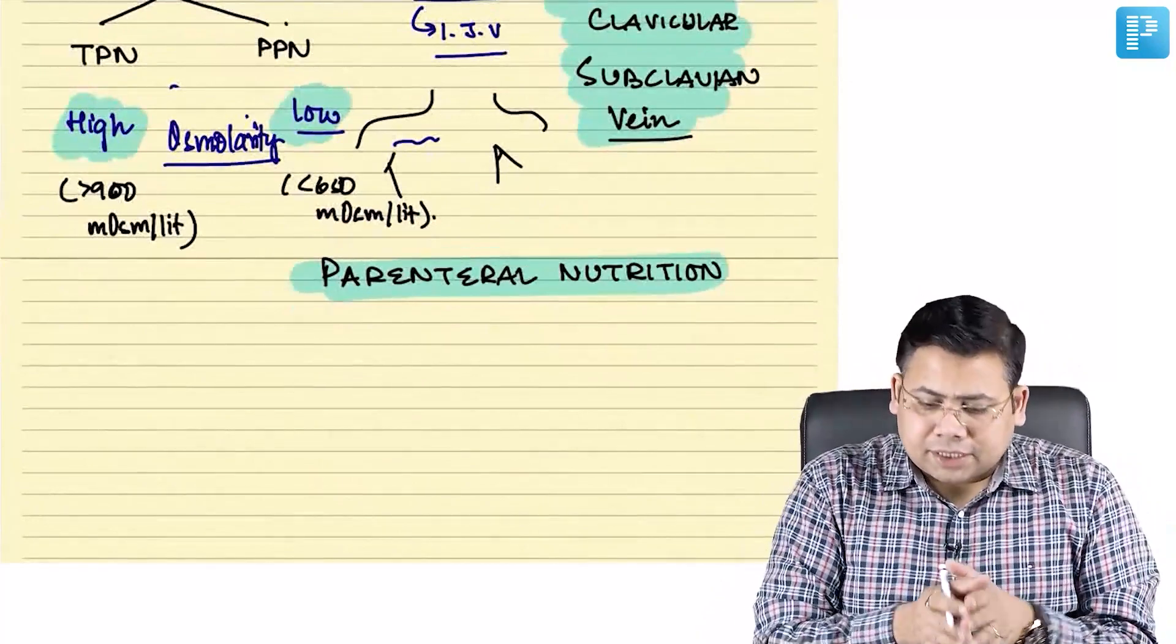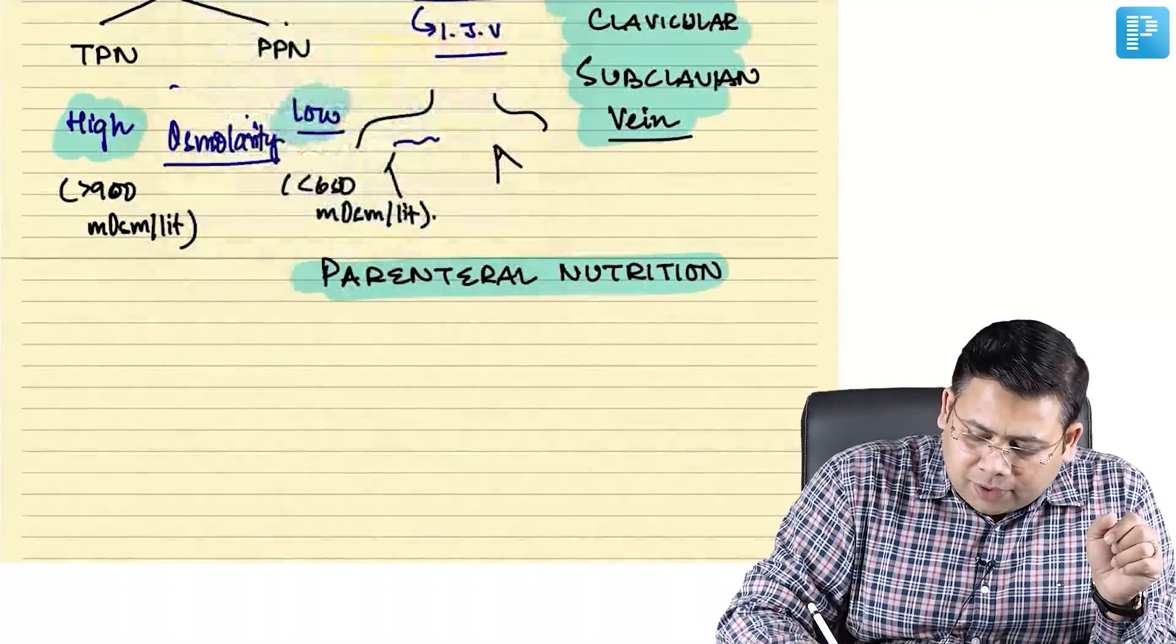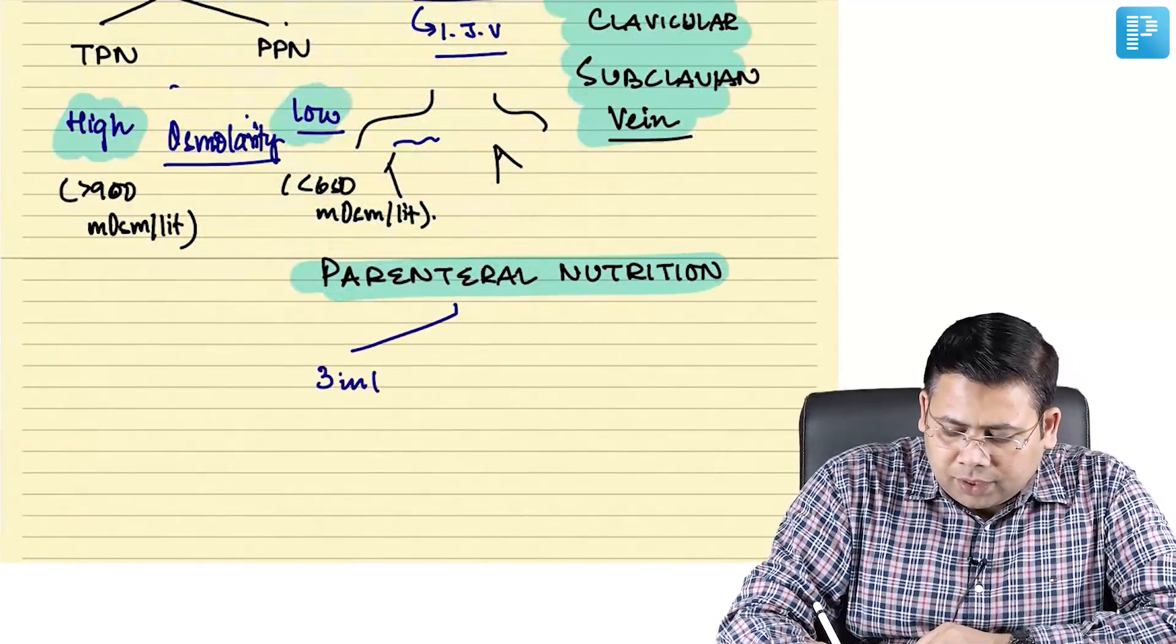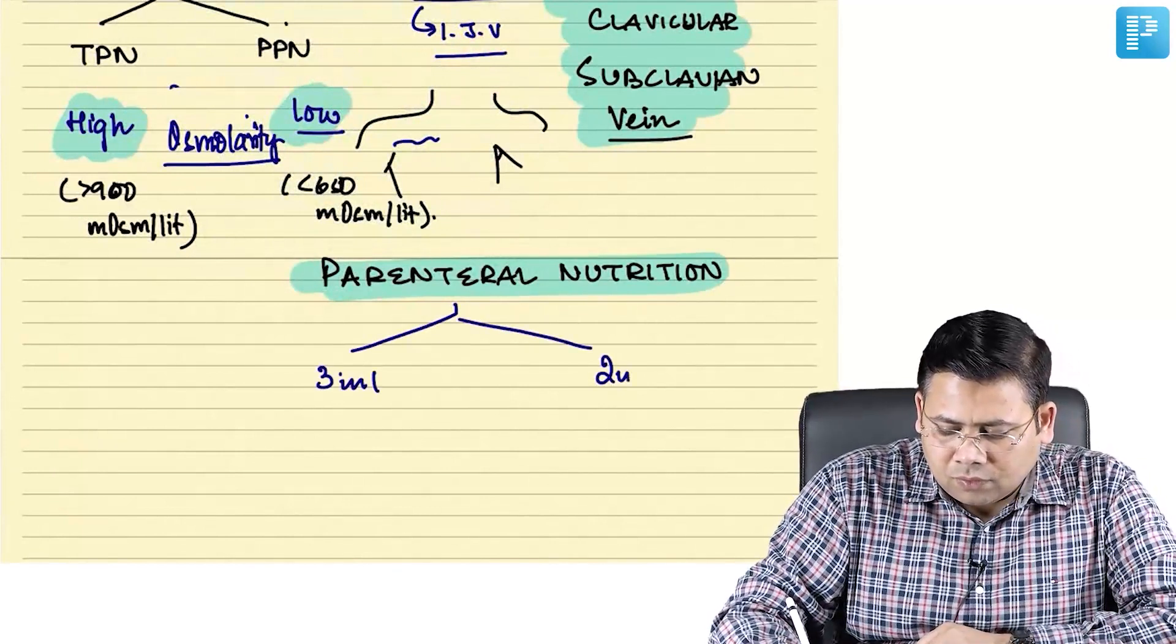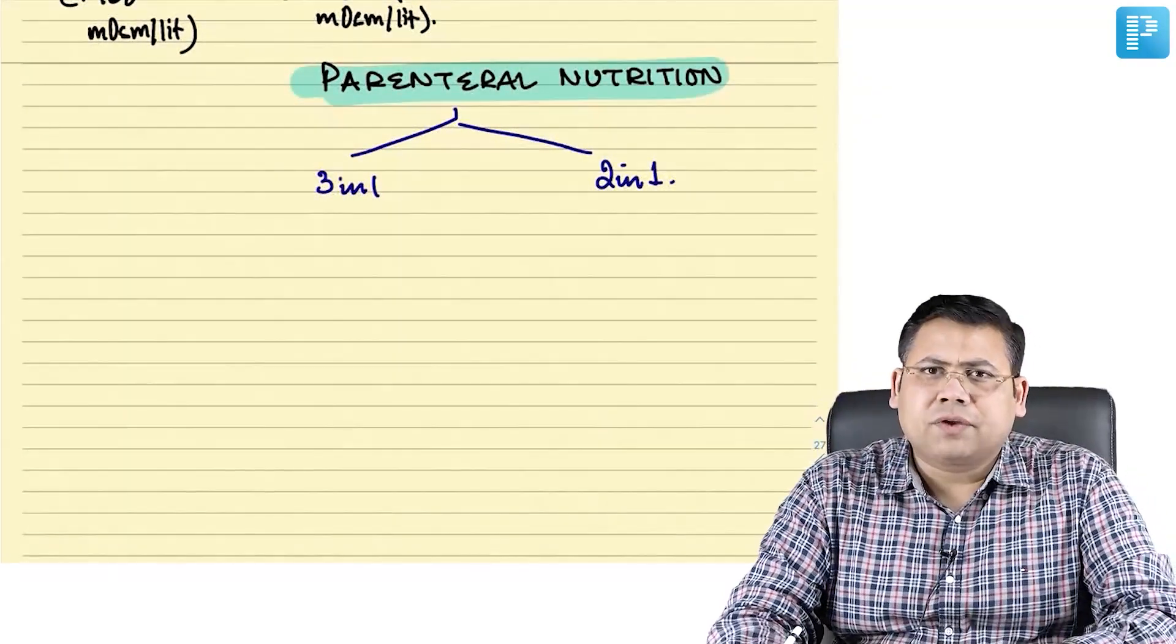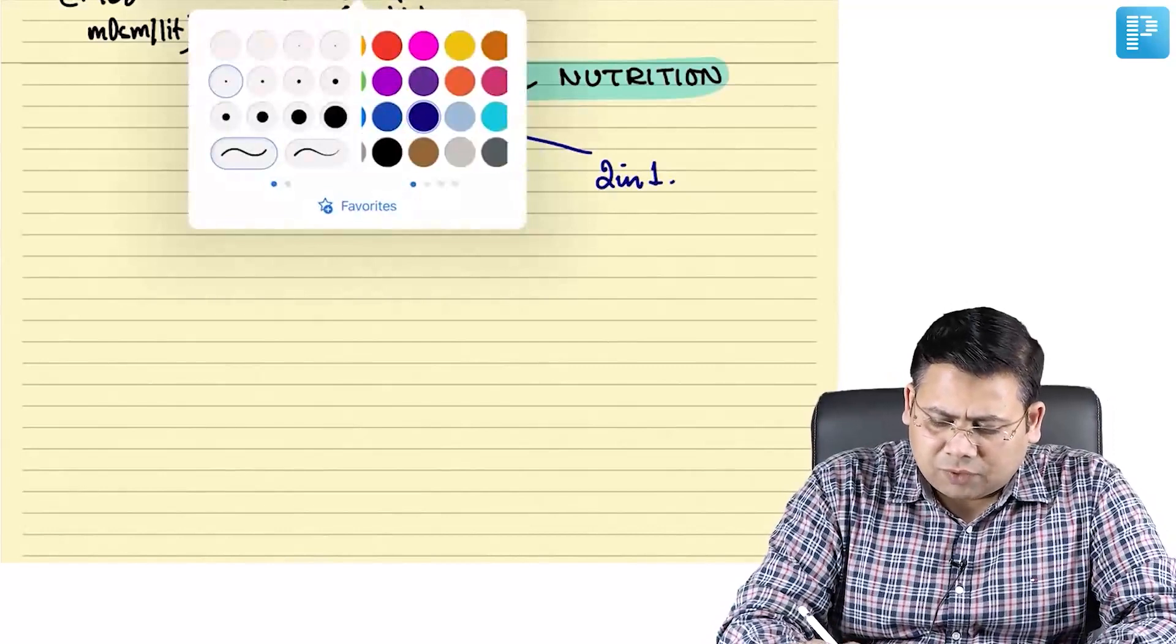Parenteral nutrition is of two types: it could be either three in one or it could be two in one. What is the classical difference between three in one and two in one? This is very important and a very basic one.